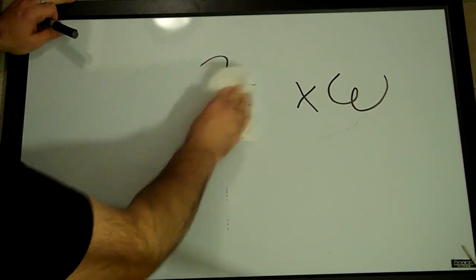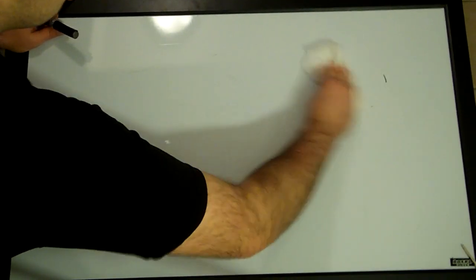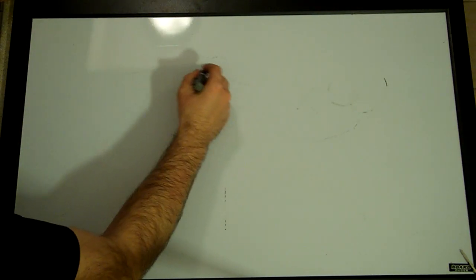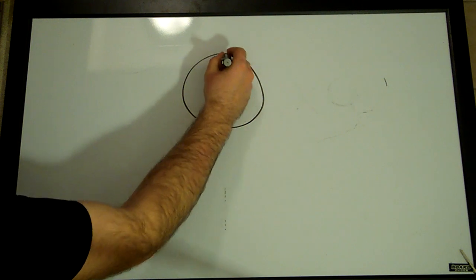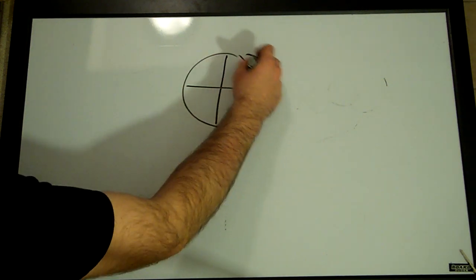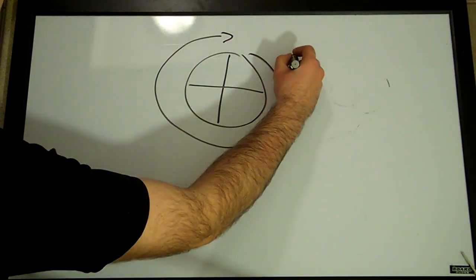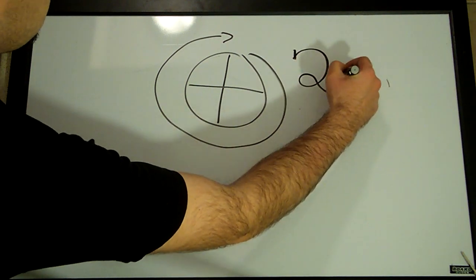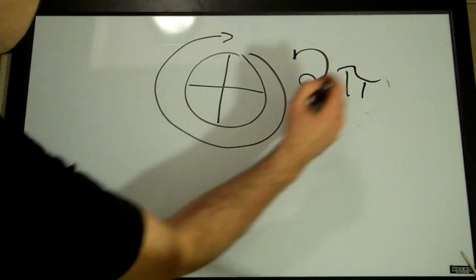Well, what is a radian? In every circle, there is exactly two pi radians.